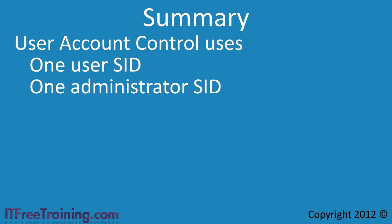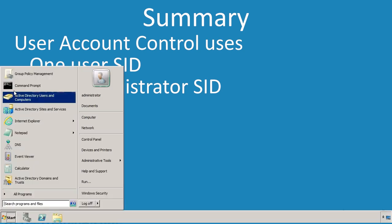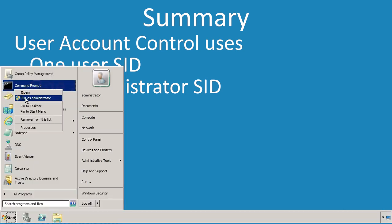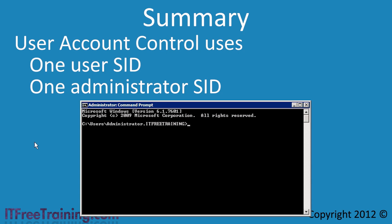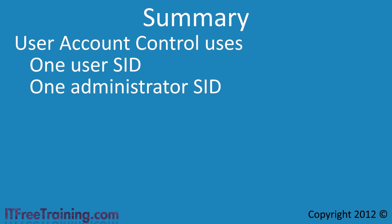If you ever need to ensure that software is run as an administrator, as shown here, right-click the application — in this case the command prompt — and select the option Run as Administrator. This will ensure that the command prompt is launched with administrator access. On a client operating system like Windows 7 you will need to do this, but on Windows Server 2008 R2 the command prompt should open by default with administrator rights and you will not need to do this.